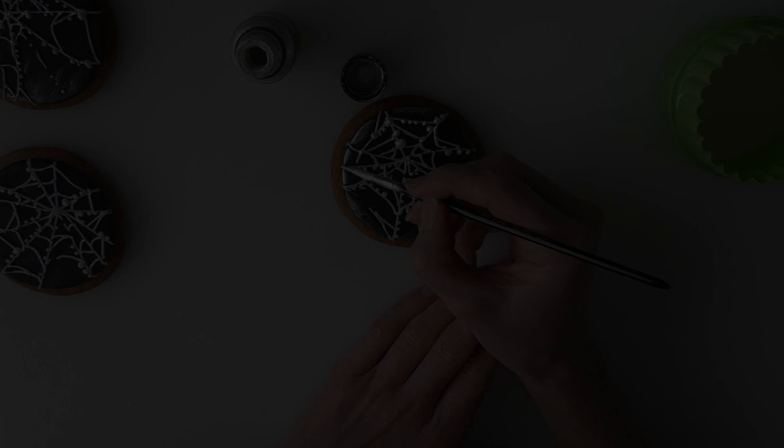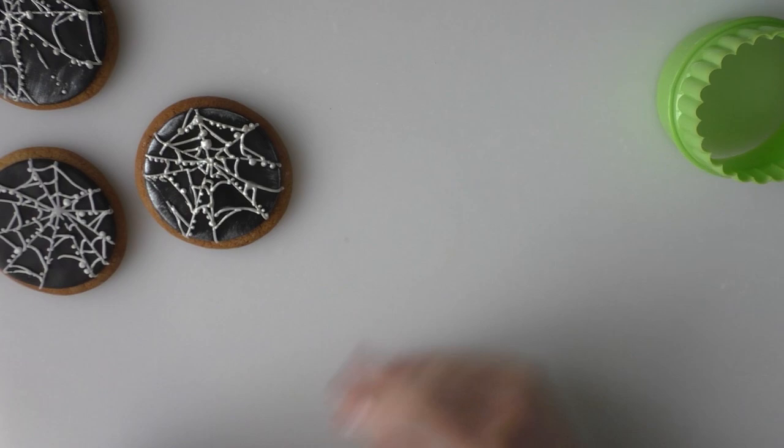And then I'll take a smaller brush to paint on the actual web bits themselves. So again, smaller brush, just gently painting on to your web. Okay, so we've just added a bit of a pearlised shimmer there to that.